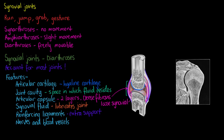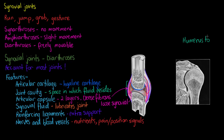The last feature is our nerves and blood vessels. These are not just important for supplying nutrients to the cells of the joint, but also for sending sensory information to our brain in relation to joint position and pain. It's important for our nerves to tell us when we're stretching our joints too far or in a direction they should not be going. So now we know all of the features that help us distinguish a synovial joint.